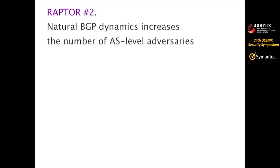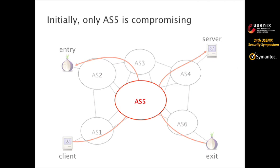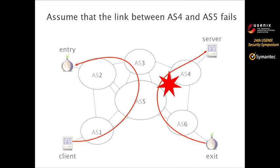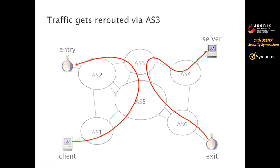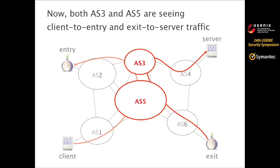Attack number two: natural BGP dynamics — it increases the number of AS-level adversaries. Using the same example, initially only AS5 is compromising. Let's assume that the link between AS4 and AS5 fails, so AS5 cannot go to AS4 directly anymore and traffic gets rerouted via AS3. Now both AS3 and AS5 are seeing both ends of the traffic, so they are both at the compromising position in addition to only AS5 at the beginning. Therefore, AS-level adversaries can leverage such routing churn in the BGP protocol to compromise the security of Tor over time.